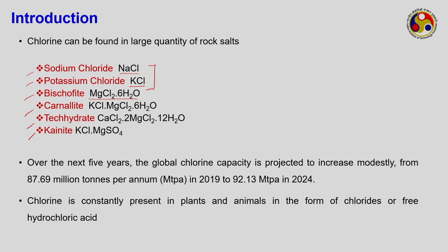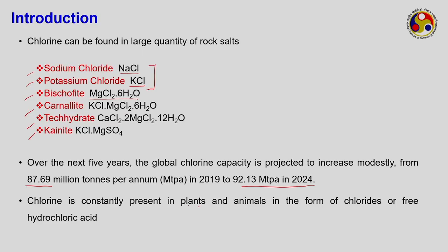The global chlorine capacity is increasing modestly, from 87.69 million tons per annum in 2019 to a projected 92.13 million tons per annum in 2024. Chlorine gas is used in the plasticizer industry, the polymer industry, and as a bleaching agent — for example, in water treatment. Chlorine is also present in plants and animals in the form of chlorides or free hydrochloric acid.